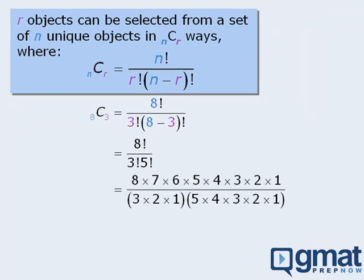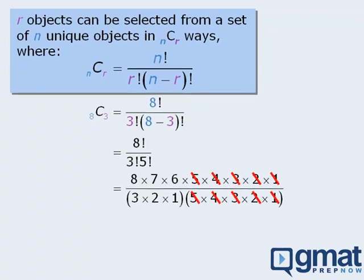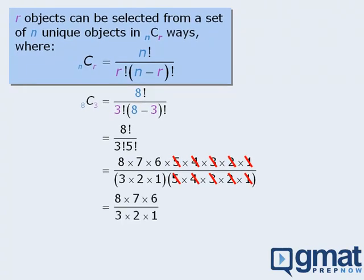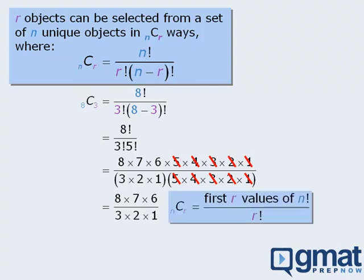From here, we'll expand the factorials, at which point we can cancel out some of the numbers in the numerator and denominator. When we cancel out the fives, fours, threes, twos, and ones from the top and bottom, notice that by applying the conventional formula and then simplifying, our fraction now conforms to our shortcut: in the numerator we have the first three terms of eight factorial, and in the denominator we have three factorial. This demonstration shows why our shortcut works.